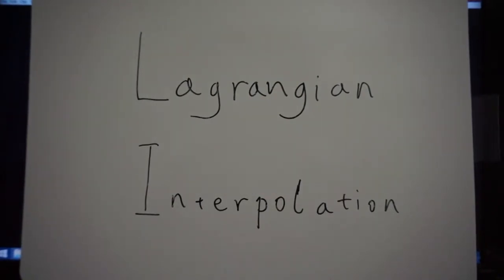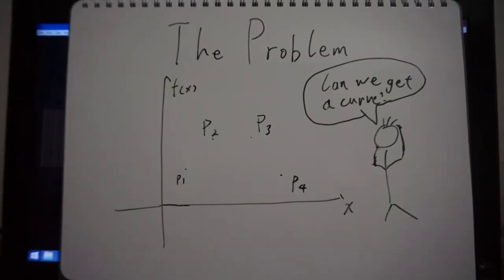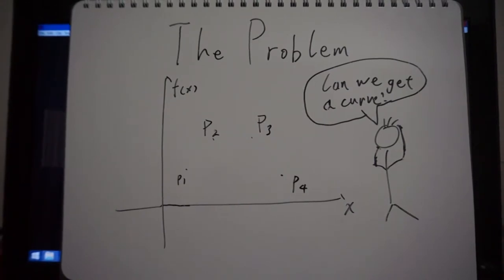Let's talk about Lagrangian interpolation. The problem is simple. You have a bunch of data, there's gaps between them. You want to fill those gaps, essentially draw a line between those points.